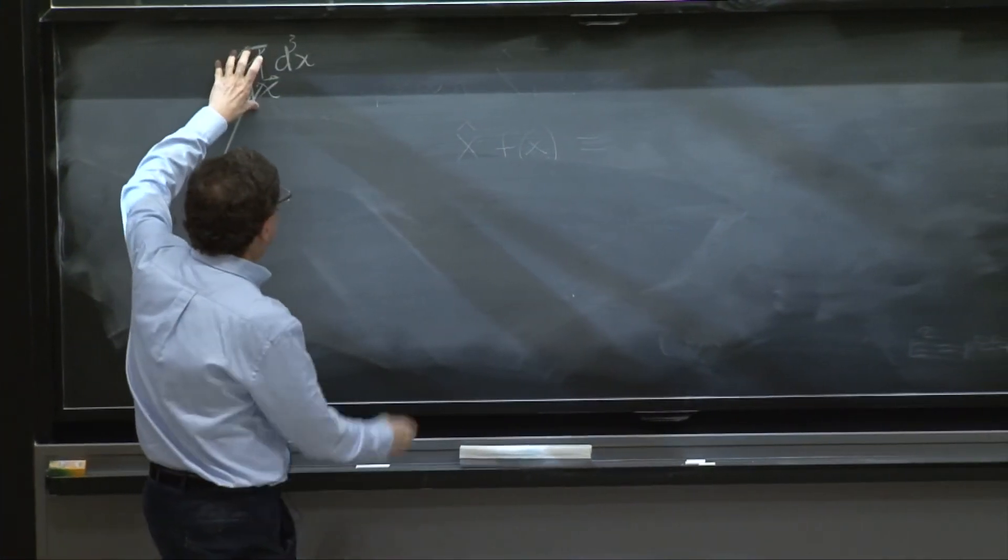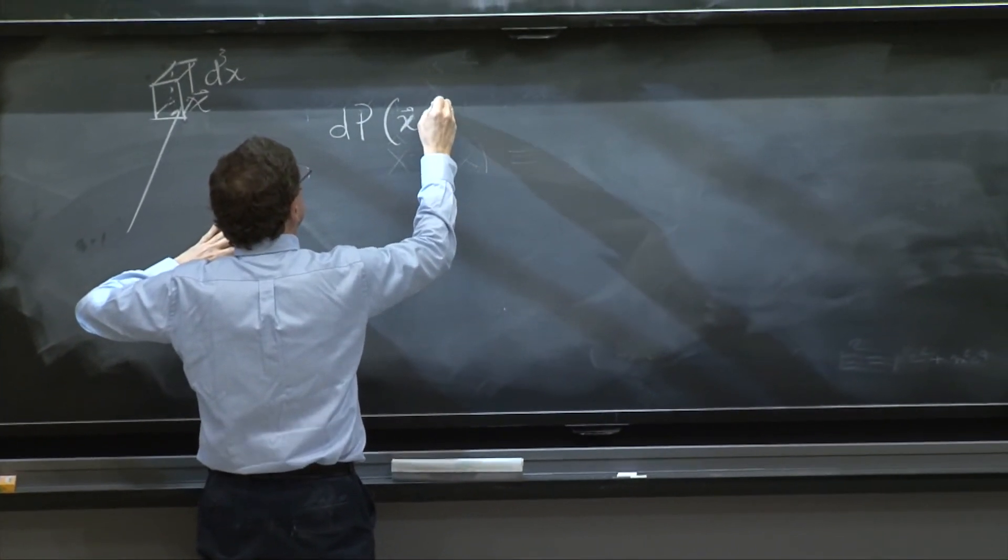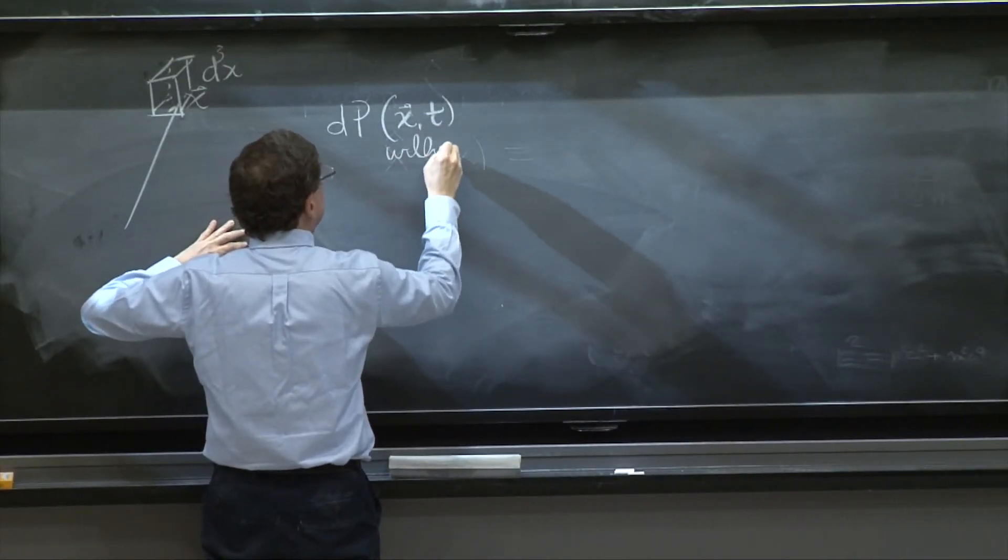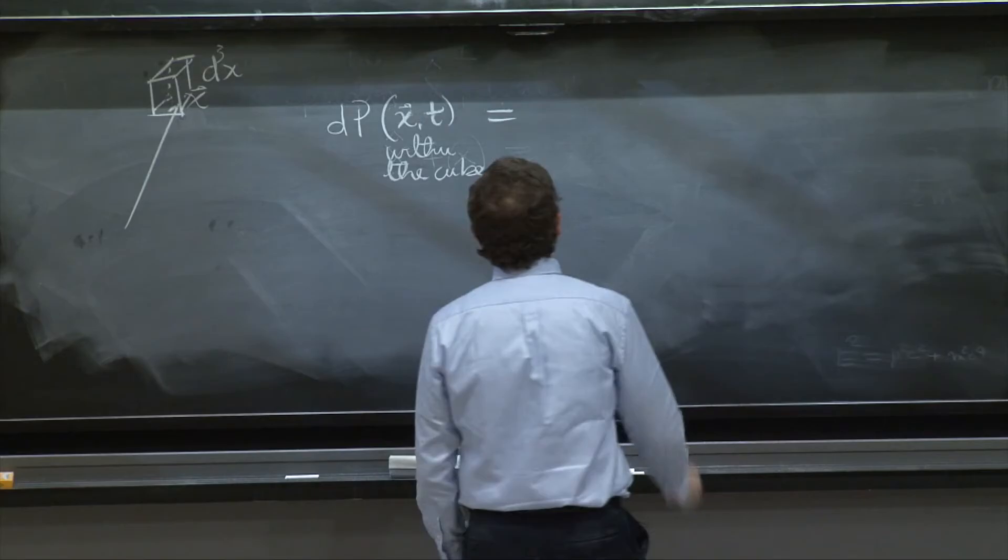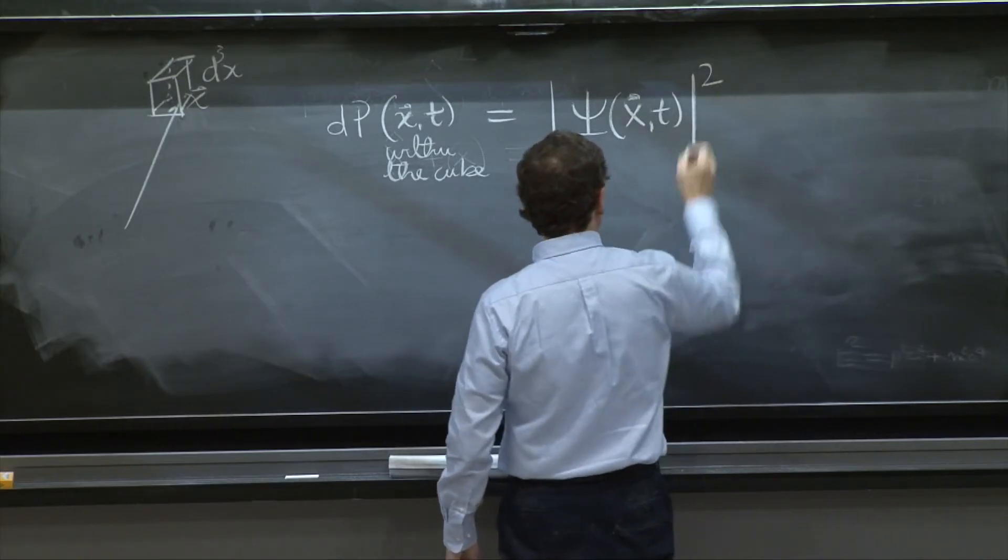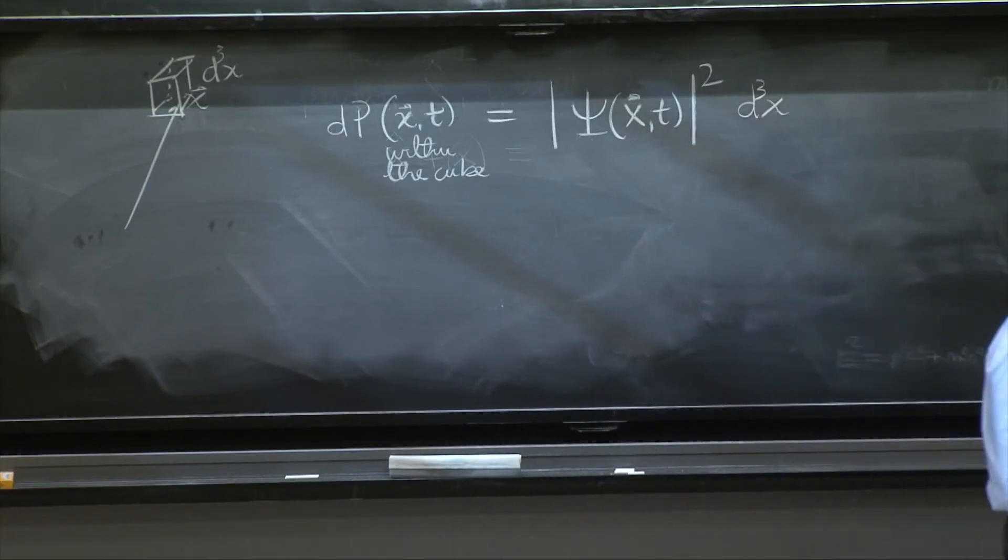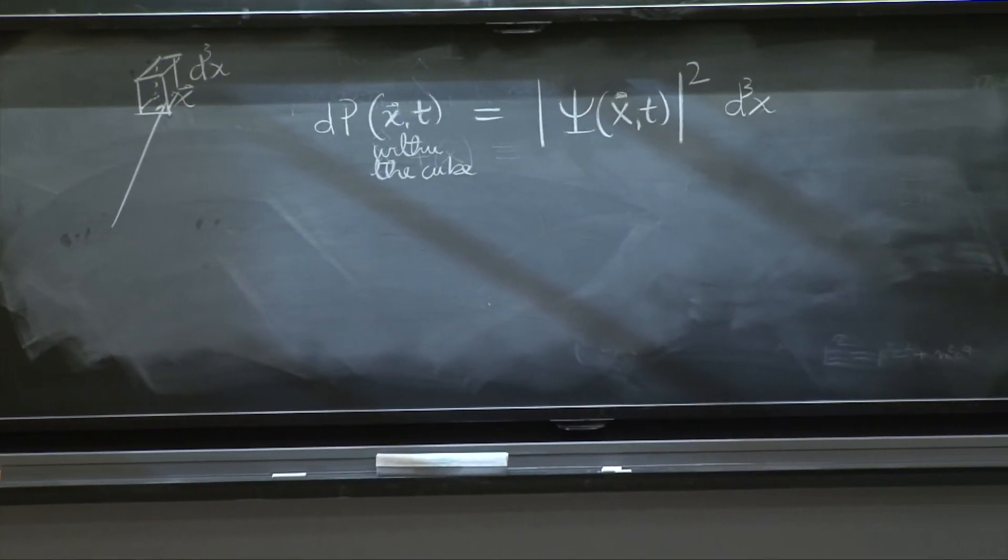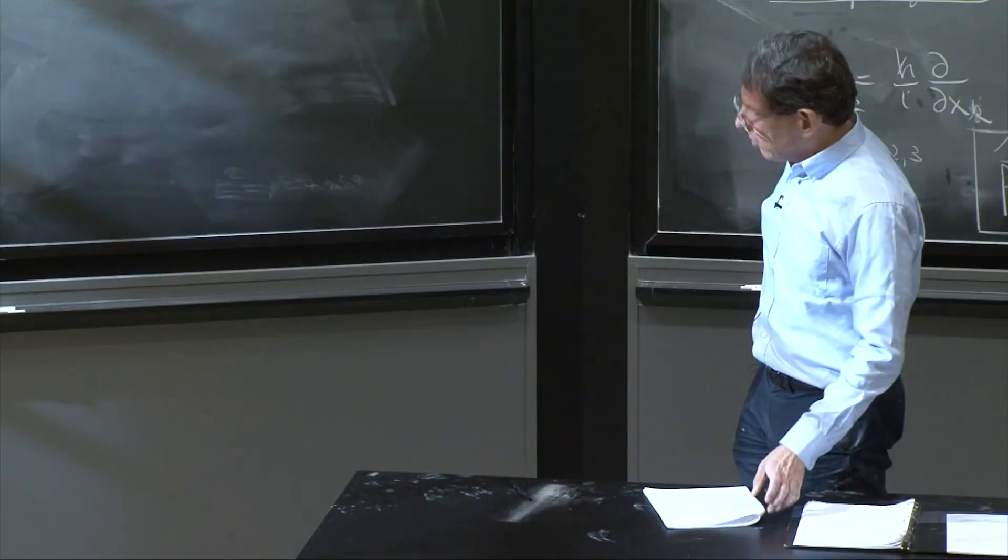And the probability dP, the little probability to find the particle at x t within the cube, is equal to the value of the wave function at that point, norm squared, times the volume, d cube x. So that's the probability to find the particle at that little cube. You must find the square of the wave function and multiply by the little element of volume. So that gives you the probability distribution, and that's really what the interpretation means.